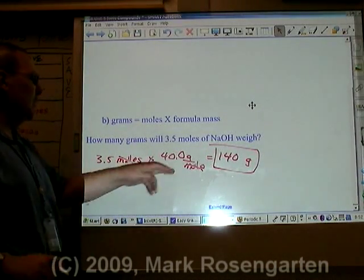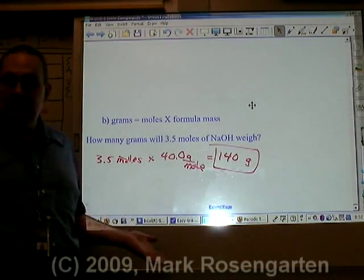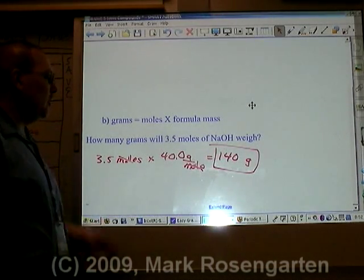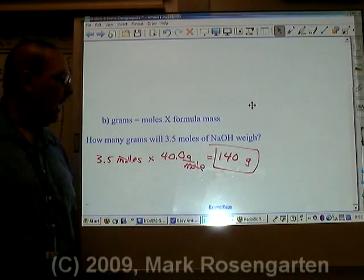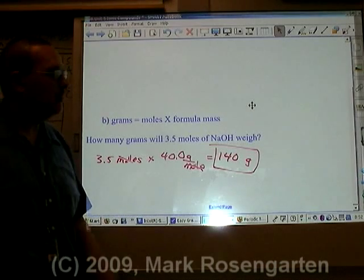Does that make sense? Because if each mole weighs 40 grams, 3.5 moles is going to be 3.5 times as many grams. I mean, if it costs you $40 to buy something, and you buy 3.5 of those things, it's going to cost you 3.5 times $40. $140. Bring your credit card.